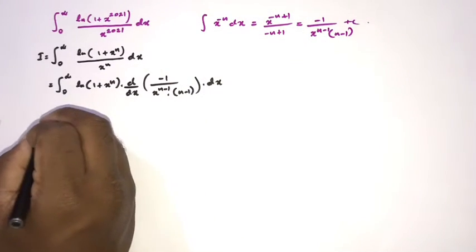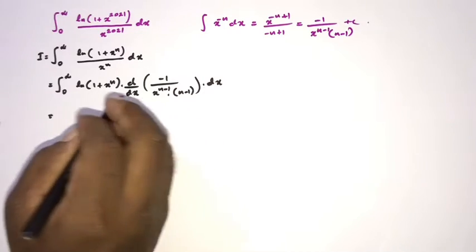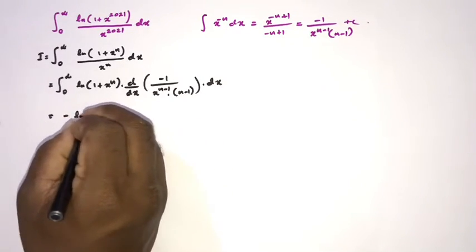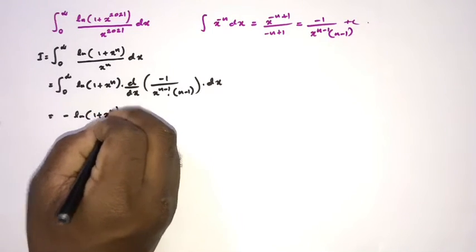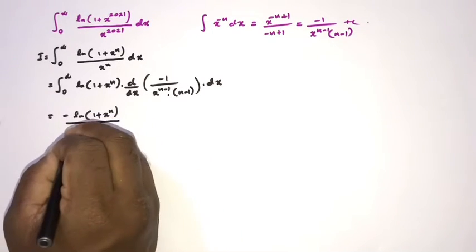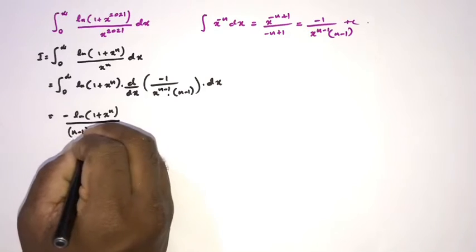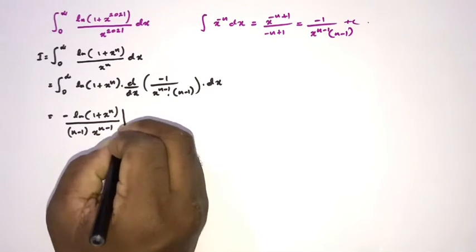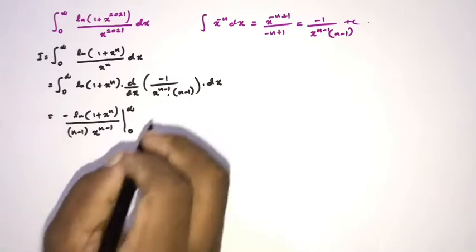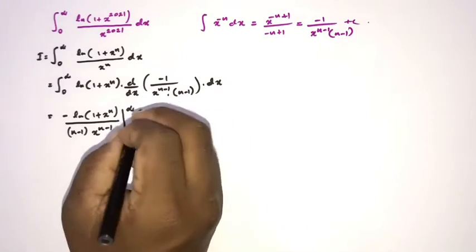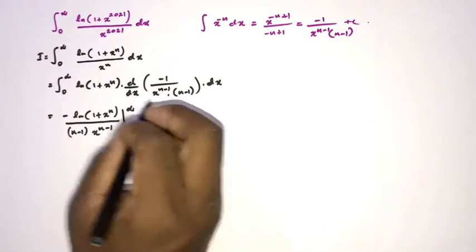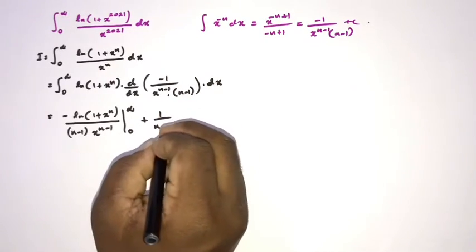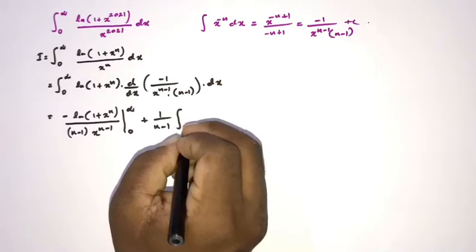We multiply the two functions to get the boundary term: -ln(1 + x^n) / [(n-1) · x^(n-1)], evaluated from 0 to infinity. Then the minus from IBP and the minus from the antiderivative combine to give a plus sign for the remaining integral.